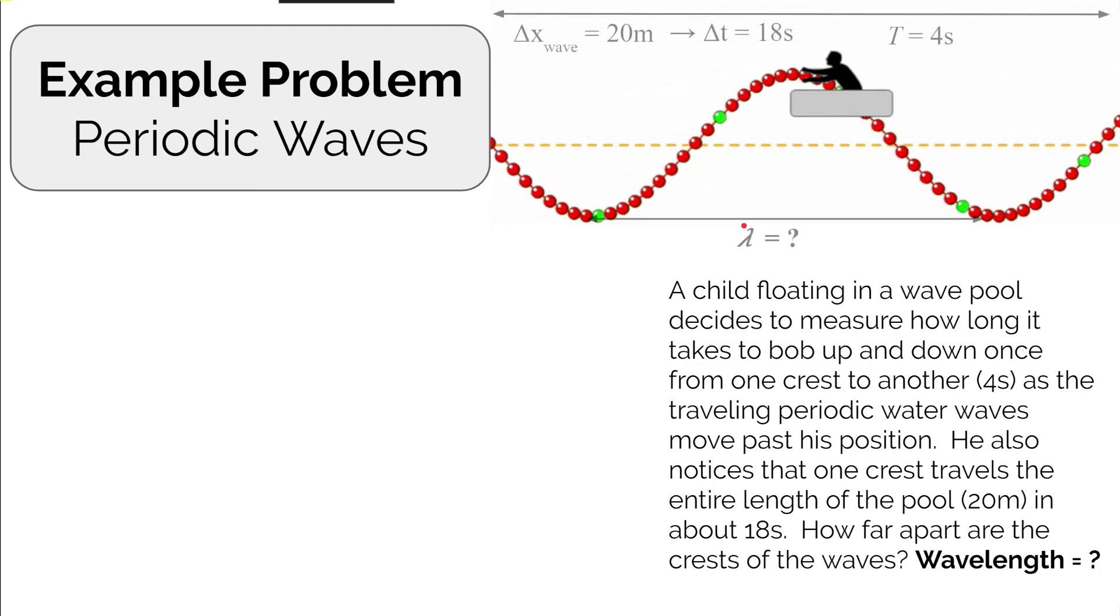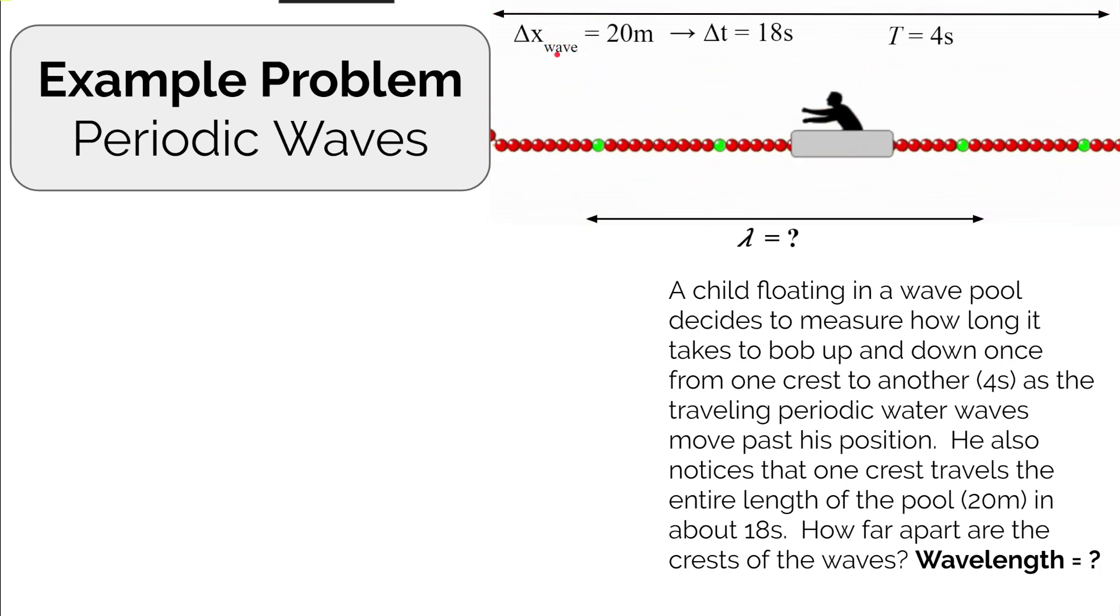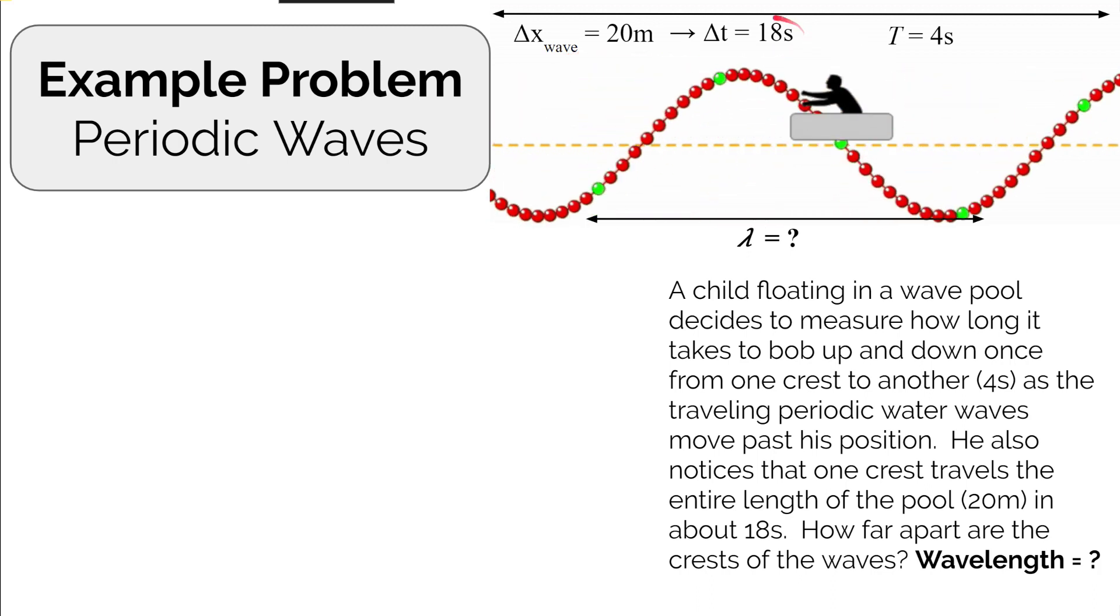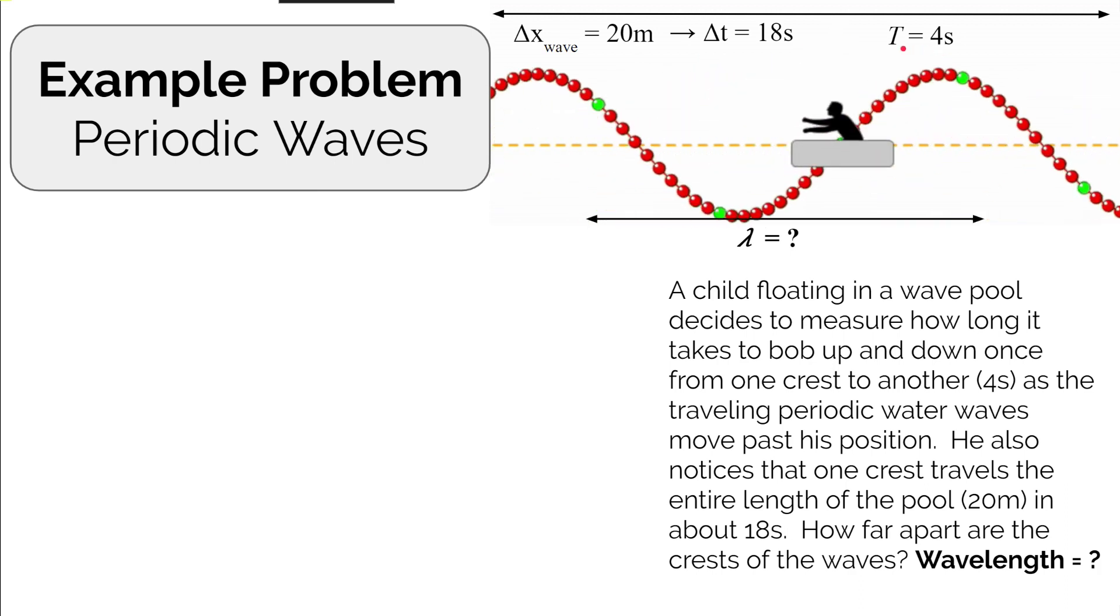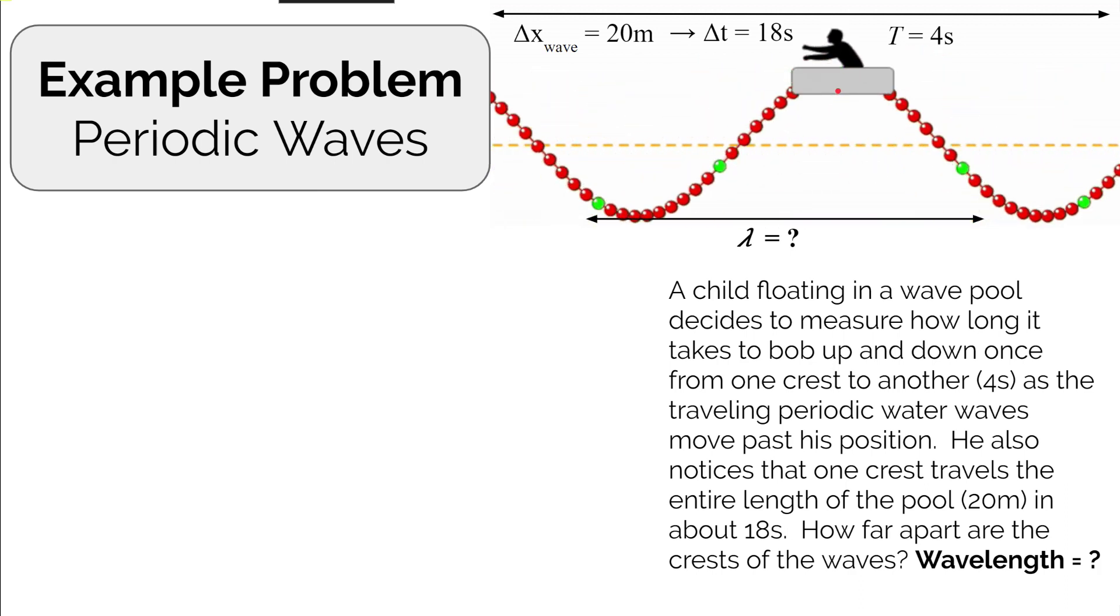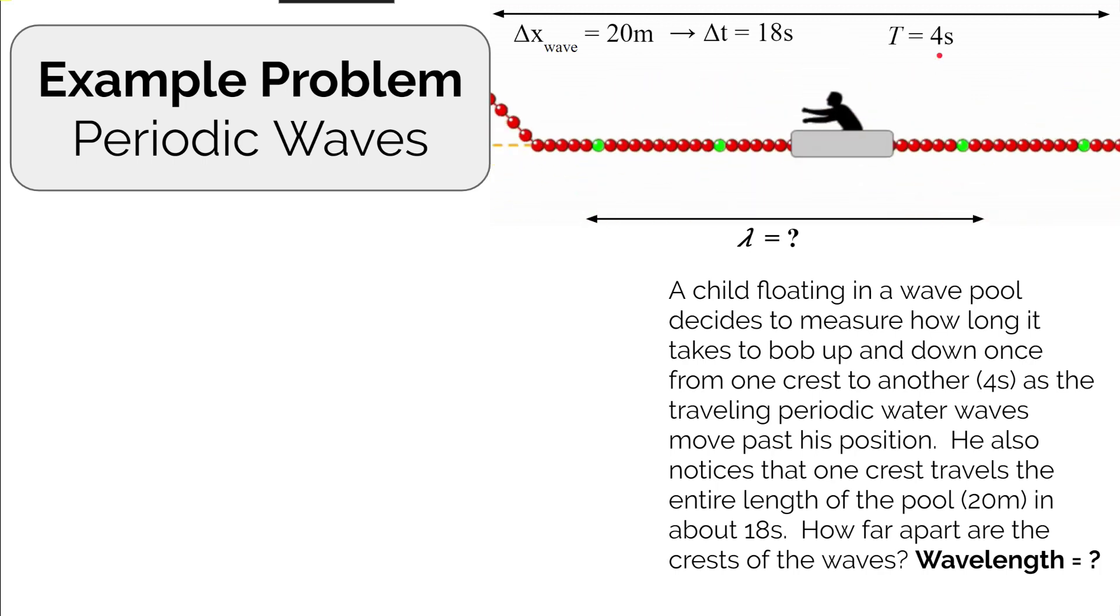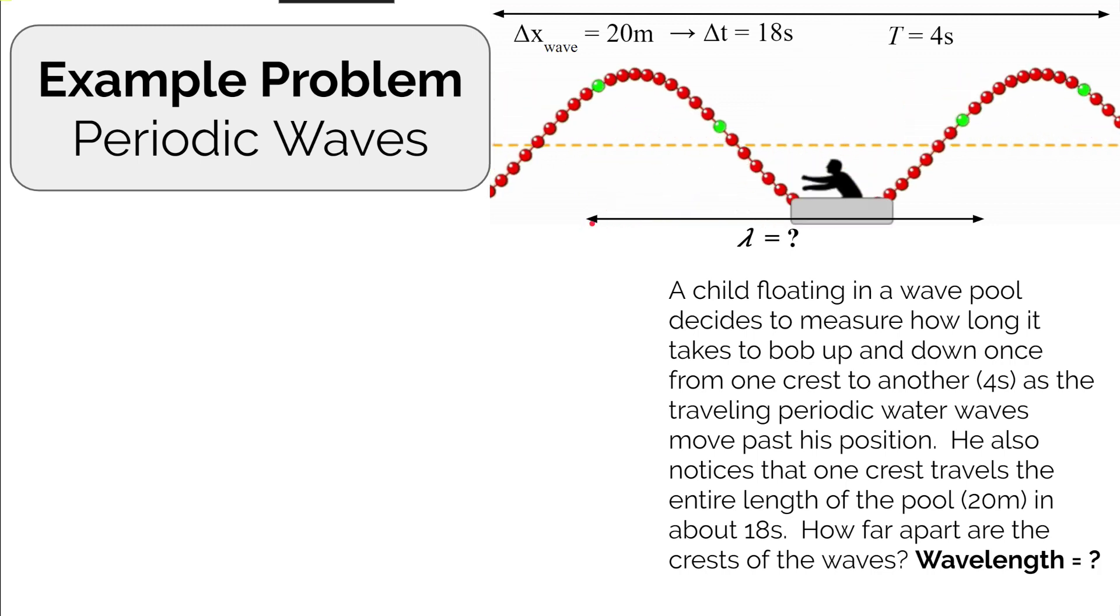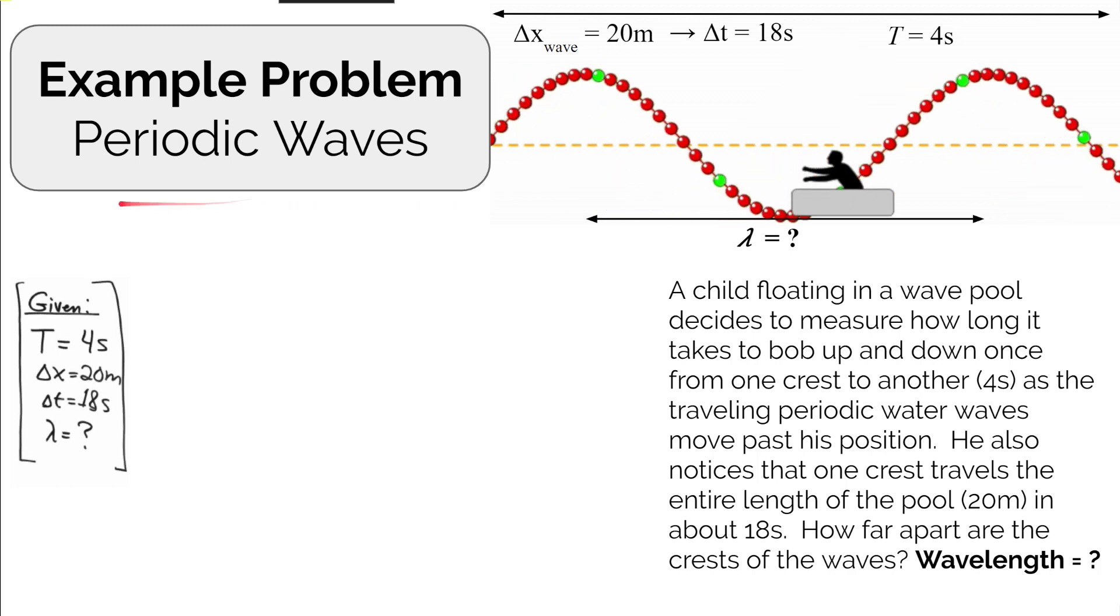What do we know? The entire length of the pool is about 20 meters, and it takes a single crest about 18 seconds to travel that 20 meters. The period of oscillation, how much time it takes to go up and down through one complete cycle, is about four seconds. What we're looking for is the wavelength, the length from one crest to another. Let's write down our given information.